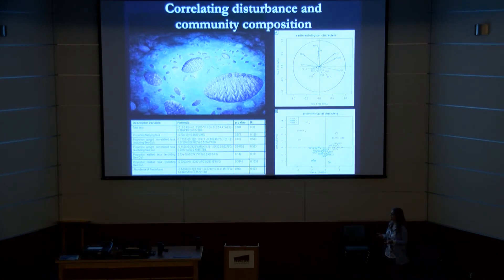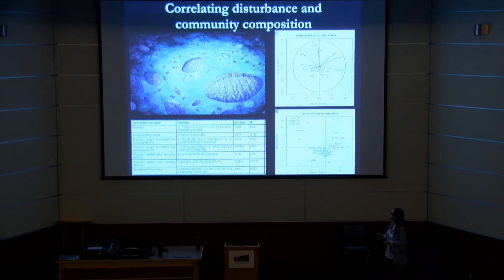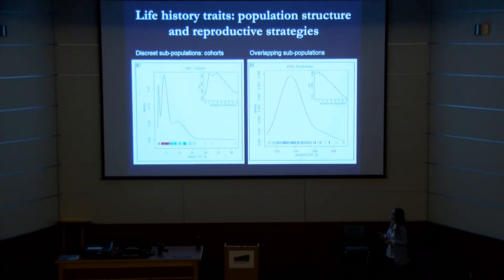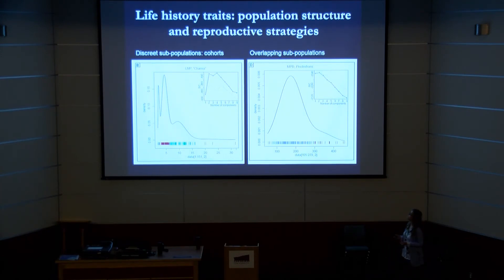Flat-lying taxa don't like a lot of sediment input, while upright and frilled taxa are much more commonly found where you have more and coarser sediment coming in. The other way we can examine this is to look at the population structures of the different taxa.